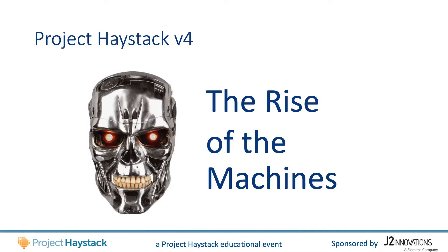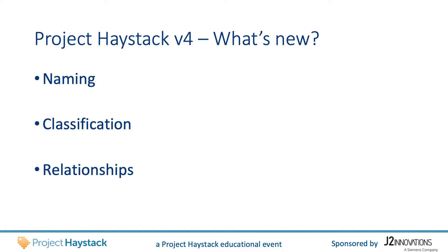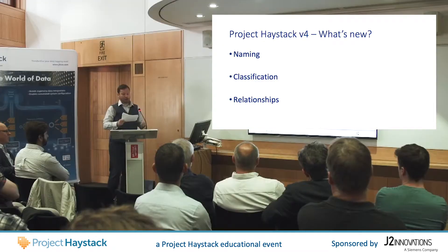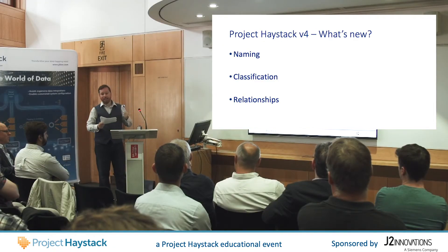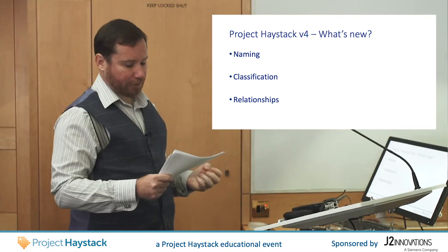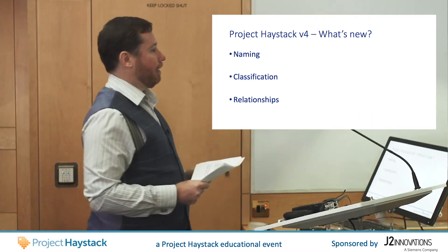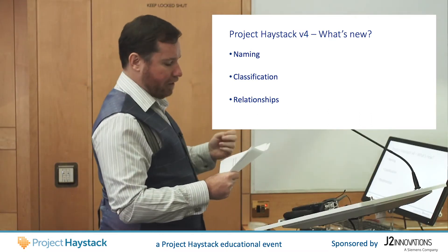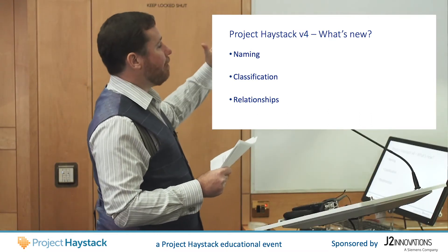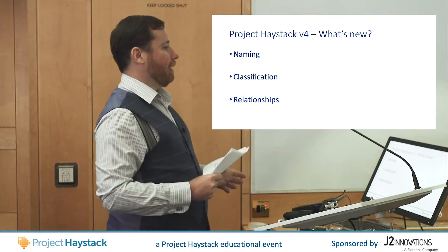It's about adding formal machine-readable definitions to Haystack tags so computers can understand more. It's about empowering computers so they can make informed decisions and do more. In reality, Project Haystack 4 is not so dramatic, but it does introduce a lot of tag metadata and formal definitions around existing Haystack tags so their data models can be more easily understood by software. In particular, I'm going to explain the concepts of naming, classification, and relationships.